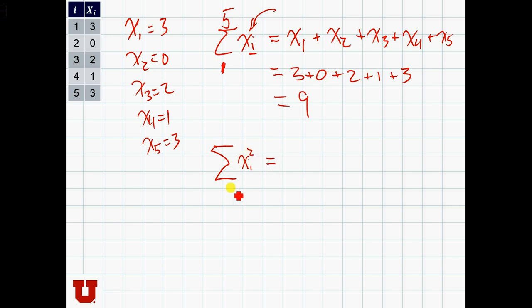And in this case, what we are going to add up, same as before, from 1 to 5, we are going to add up x1 squared plus x2 squared plus x3 squared plus x4 squared plus x5 squared.